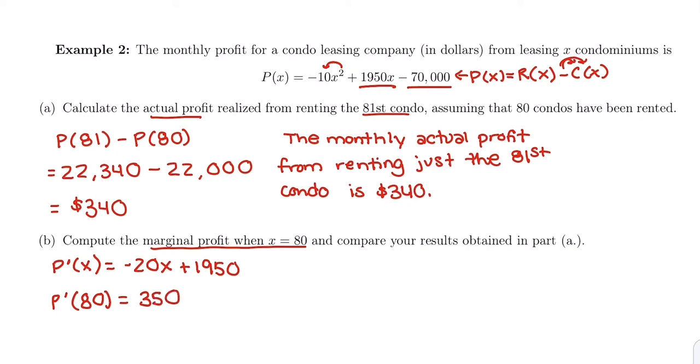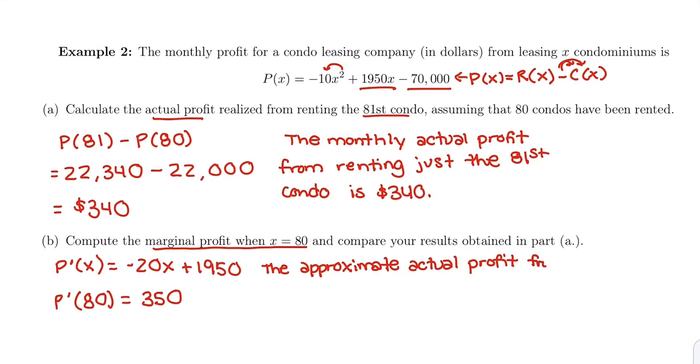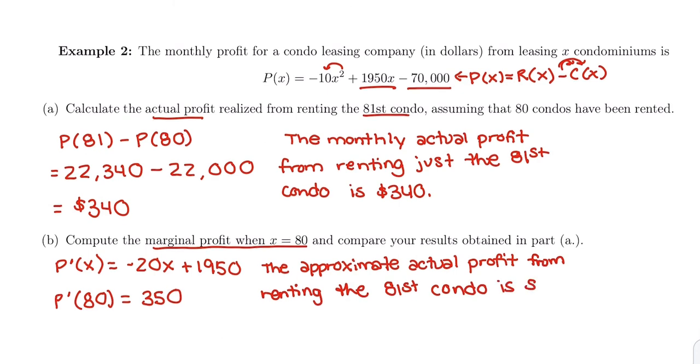So that says marginal approximates actual. The approximate actual profit, normally from selling when it's profit, but for this it's from renting. So from renting the 81st condo is $350.